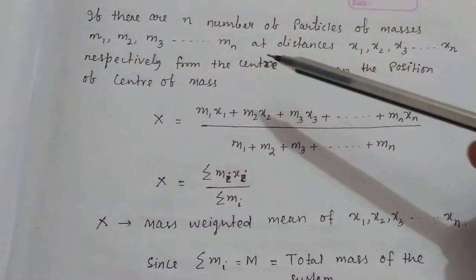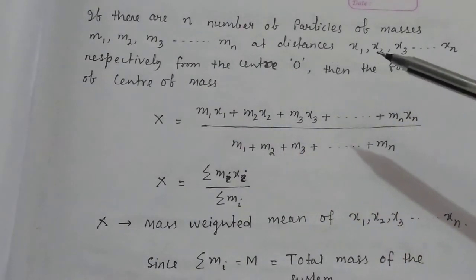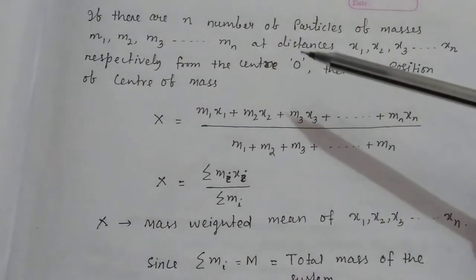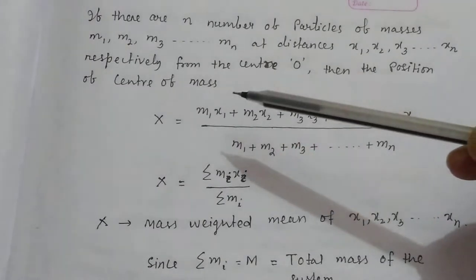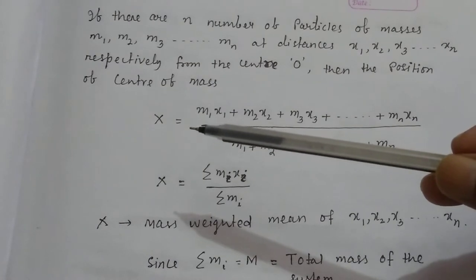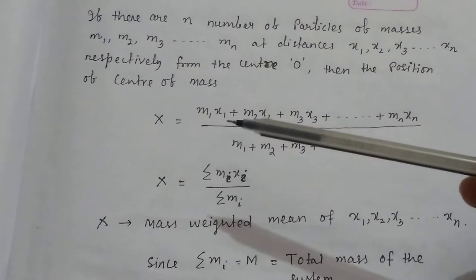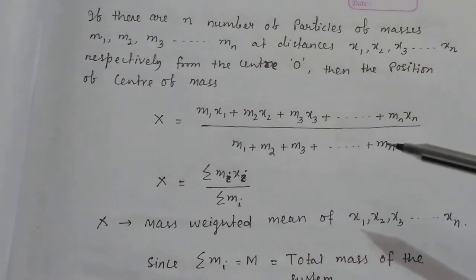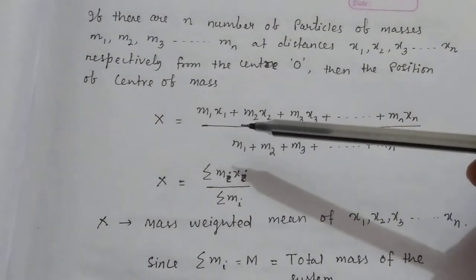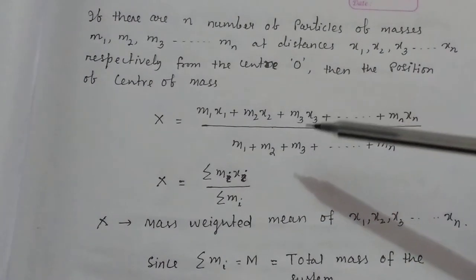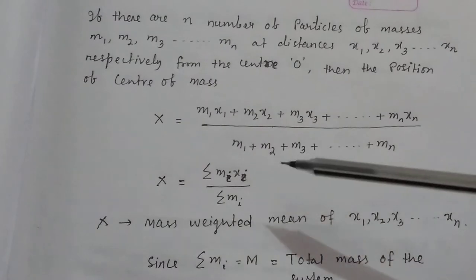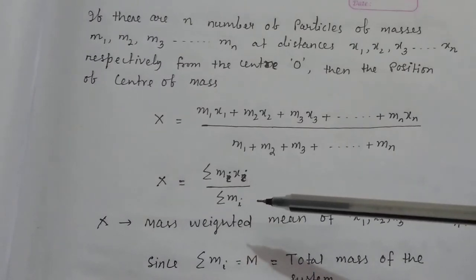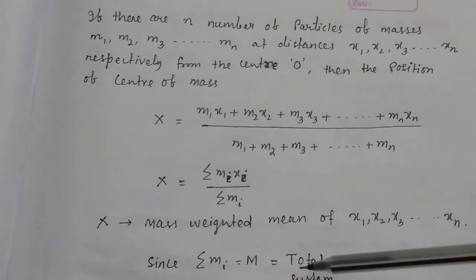If you have N number of particles of masses M1, M2, M3, ... Mn at distances x1, x2, x3, ... xn respectively from the center O, then the position of the center of mass x will be equal to M1x1 plus M2x2 plus M3x3 up to Mnxn divided by M1 plus M2 plus M3 up to Mn. Here x is the mass weighted mean of x1, x2, x3, and xn. This equation may be written in summation notation as x equals the sum of Mi·xi divided by the sum of Mi, where the sum of Mi is the total mass of the system, denoted M.